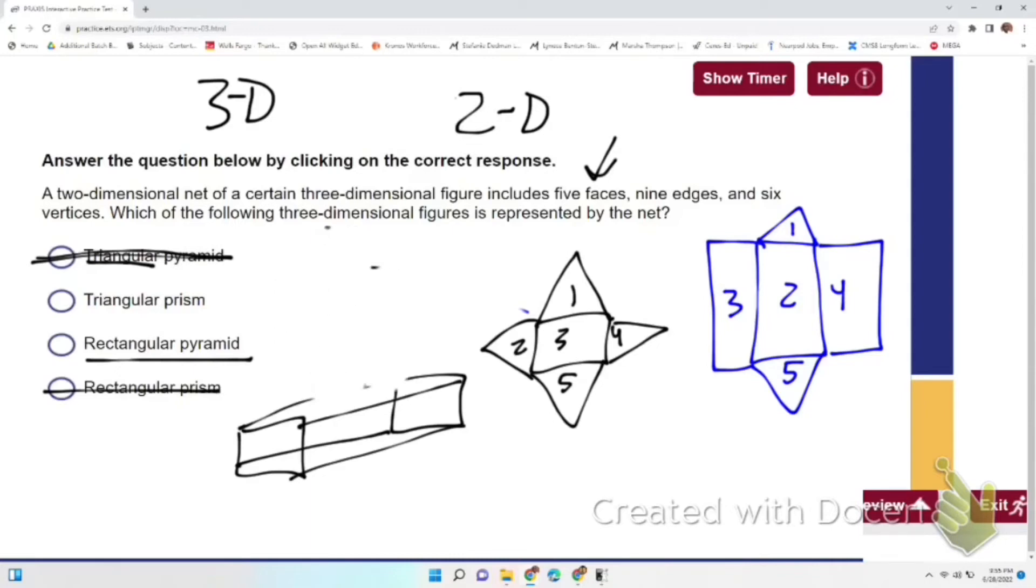So we have either answer choice two or answer choice three that we can work with because they both have five faces. Next thing we can do to weed it out is look at either the edges or the six vertices. The vertices are what I like going with the most. Vertices are the points on a three-dimensional graph or figure.